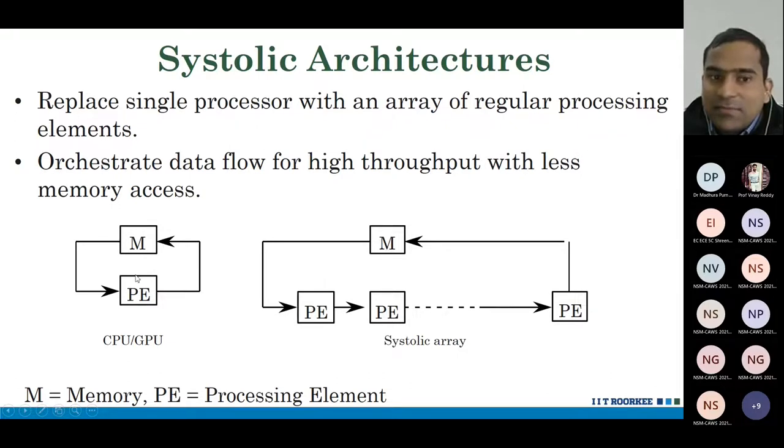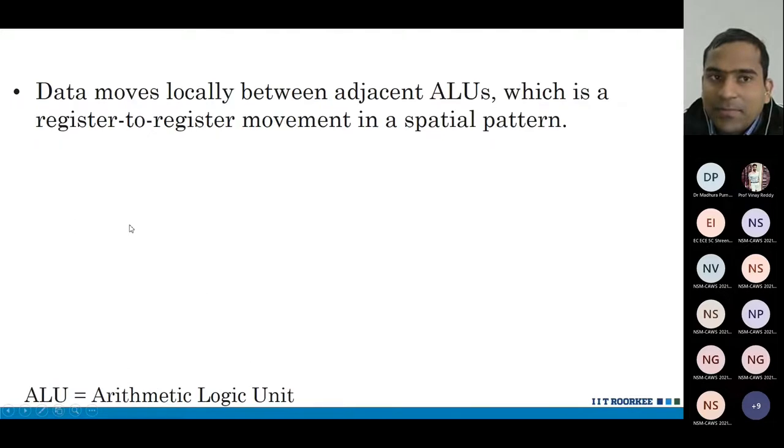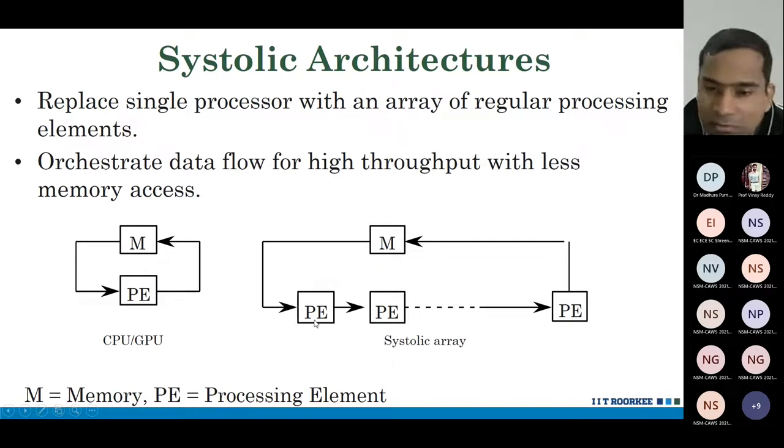We have replaced, instead of one processing element, we have multiple PEs arranged in an array, and they access the memory. The data moves locally between adjacent ALUs, which is a register-to-register movement in a spatial pattern. Data is moving locally. This PE is also same as ALU. PE is doing any processing, such as MAC operation or other ALU operations.